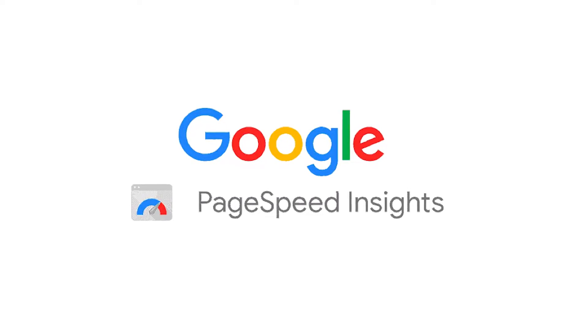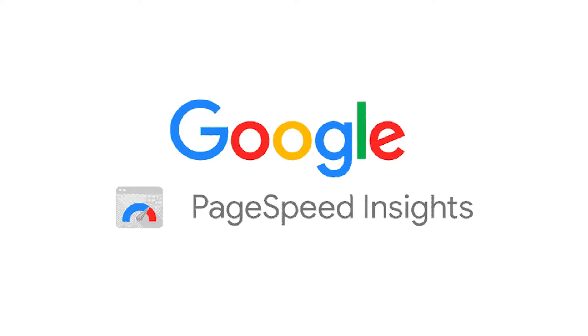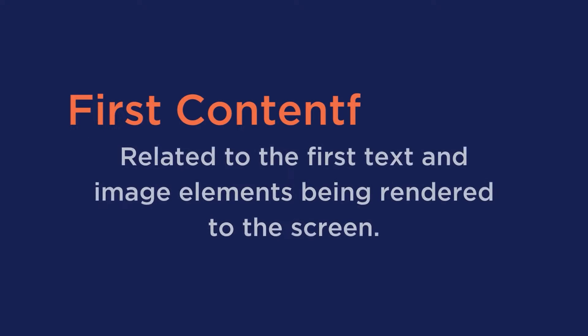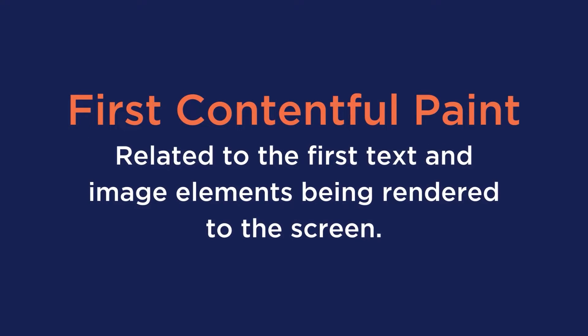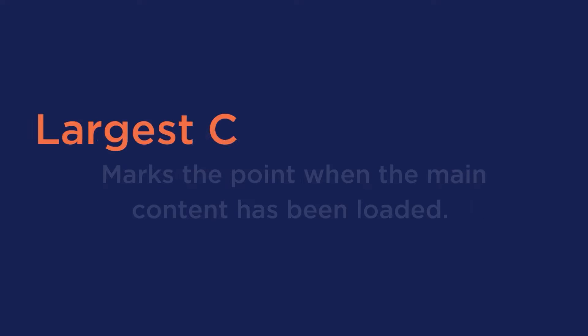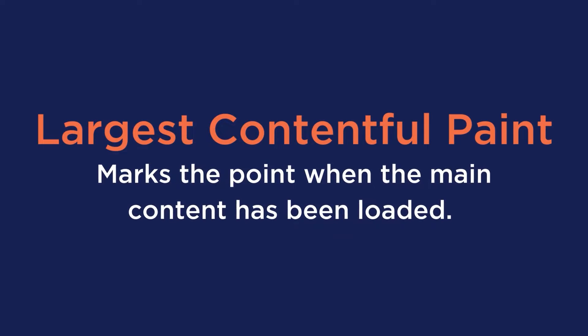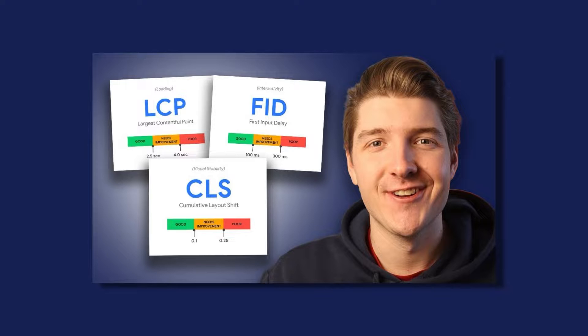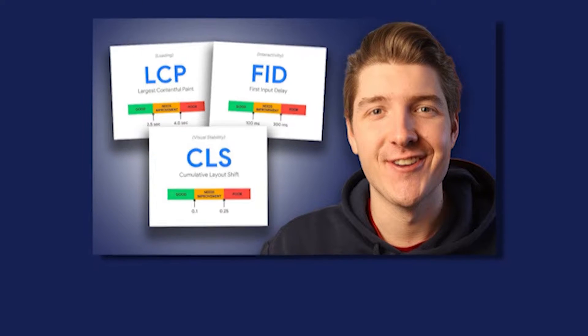Now let's talk about the impact of images on Google Page Speed Insights. Page Speed Insights is a tool powered by Lighthouse that analyzes the content on a web page, including images. There are two page speed metrics impacted by images: First Contentful Paint, which relates to the first text and image elements being rendered to the screen, and Largest Contentful Paint, which marks the point when the main content has been loaded. If you want to learn more, we have a video breaking down the core web vitals.